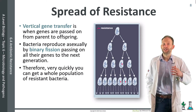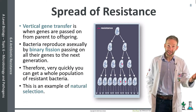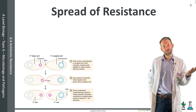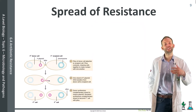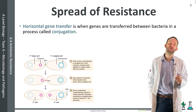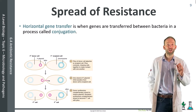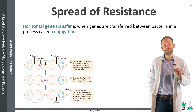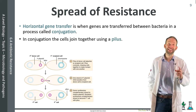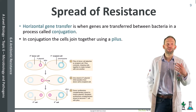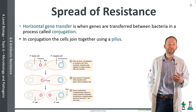The other way resistance spreads is via horizontal gene transfer, where genes are transferred between bacteria in a process called conjugation. In conjugation, the cells join together using a pilus and DNA is transferred from one cell to the other via plasmids.